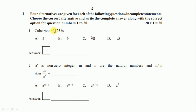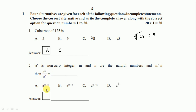Question 1: the cube root of 125 is 5. The correct answer is option A, 5. Question 2: A is a non-zero integer, m and n are natural numbers, and m is greater than n, then a raised to m divided by a raised to n equals — this is a direct question on the law of exponents. The answer is a raised to m minus n.